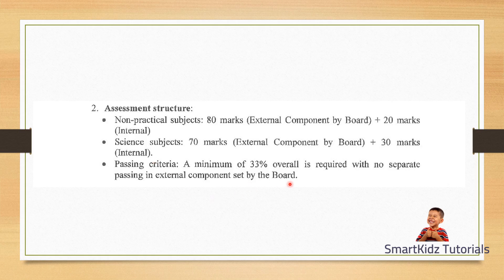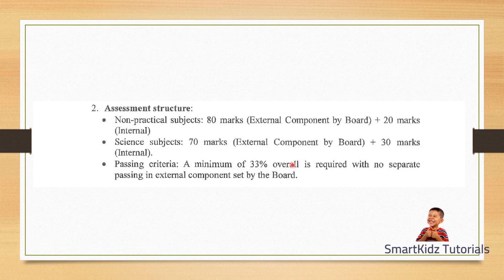So in total, you need 33 out of 100 — whether that is 80+20 for most subjects or 70+30 for science. You need 33% to pass in each subject. If you score well in your internal assessment, passing becomes easier, particularly in science where internal assessment is worth 30 marks.